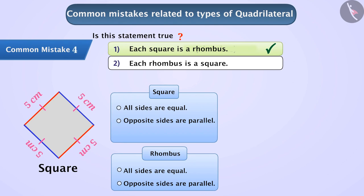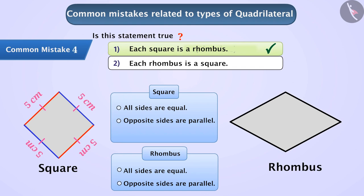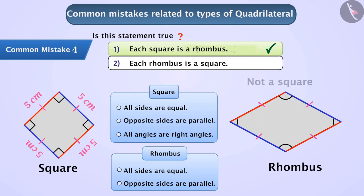Now let's observe the other half of the statement. We will draw a rhombus. On measuring this rhombus, we realize that the length of all its sides are equal and opposite sides are parallel, but its angles are not right angles. Since all angles of a square must be right angles, this figure is not a square. Students make mistakes due to confusion between rhombus and square concepts. Therefore, every square is a rhombus, but every rhombus is not a square.